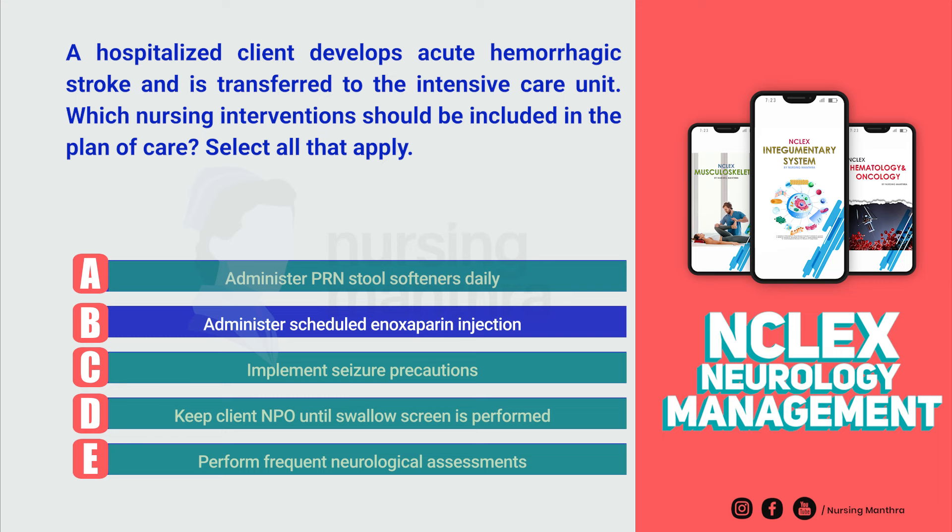The correct answers are Option A — Administer PRN stool softeners daily; Option C — Implement seizure precautions; Option D — Keep client NPO until swallow screen is performed; and Option E — Perform frequent neurological assessments.